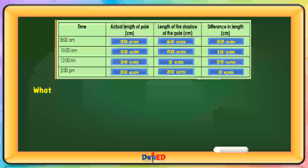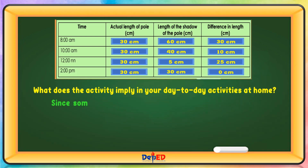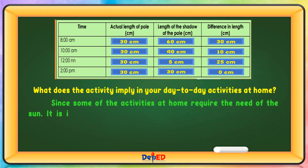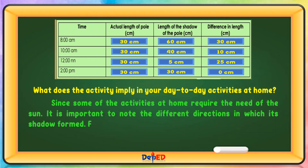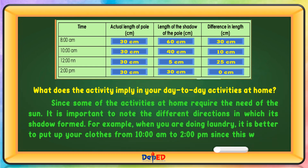What does the activity imply in your day-to-day activities at home? Since some activities at home require sunlight, it is important to note the different directions in which shadows are formed. For example, when you are doing laundry, it is better to put up your clothes from 10 a.m. to 2 p.m., since this will give you a direct ray of sun.